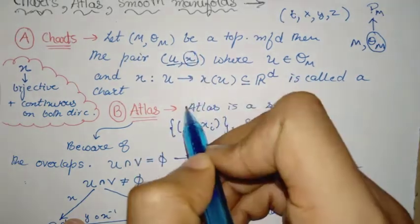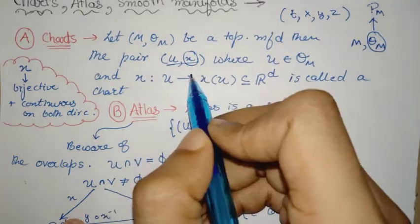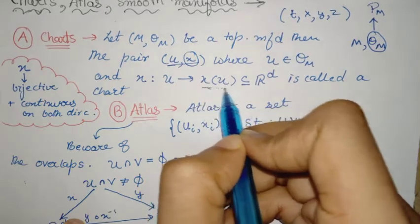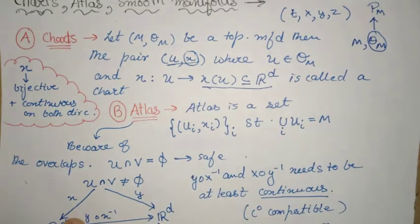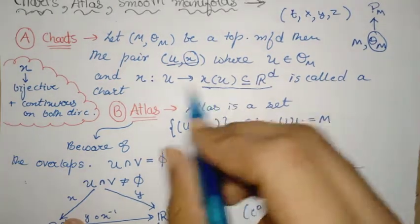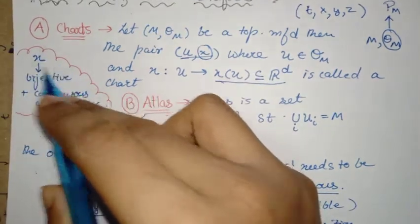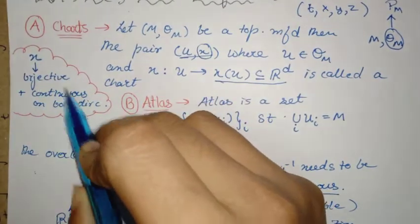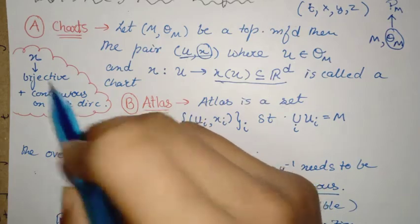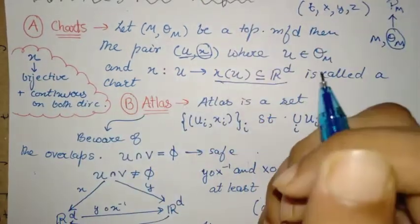So given a topological manifold, obviously I have a collection of open sets and the maps that map them to the underlying that actually causes homeomorphism. So these maps X are called the chart maps.